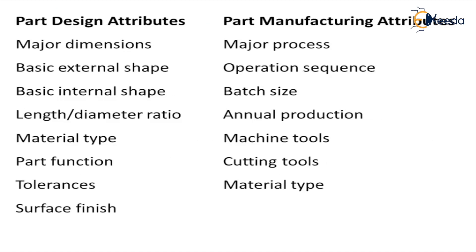As far as the manufacturing category is concerned: what is the major process, what is the operation sequence, what is the batch size, what is the expected annual production, which machine tool is going to be used, which cutting tool is going to be used, and what is the material of the component — all these come under the manufacturing structure.